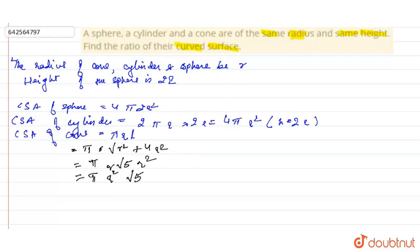So now if we have to take the ratio, this will be 4πR² : 4πR² : πR²√5, right?